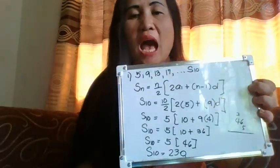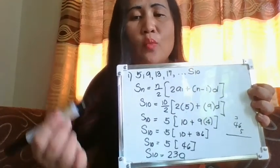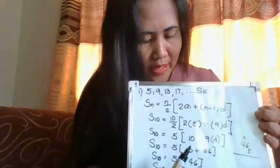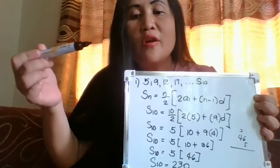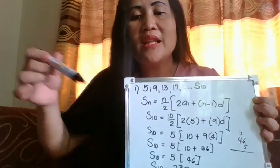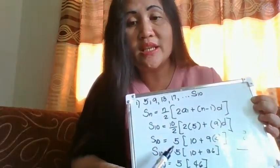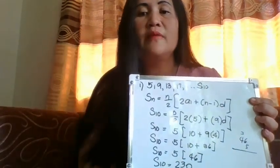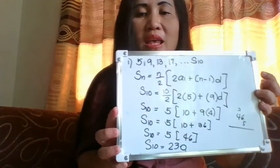This is how to solve for the sum of a given arithmetic sequence. But what if n is not divisible by 2? You just continue using n over 2. Afterwards, in your final answer, just simplify. For example, it's 9 over 2 — you just carry on with 9 over 2, and you know how to multiply fractions: numerator by numerator over denominator by denominator. That is how to solve for the sum of an arithmetic sequence.